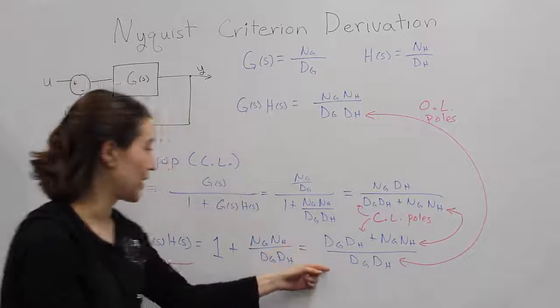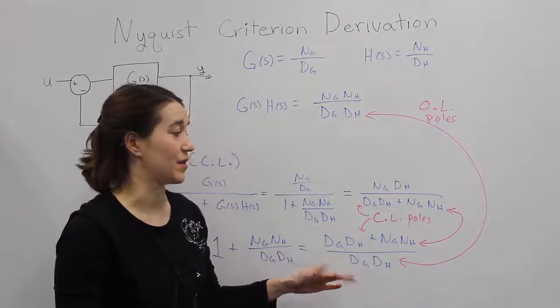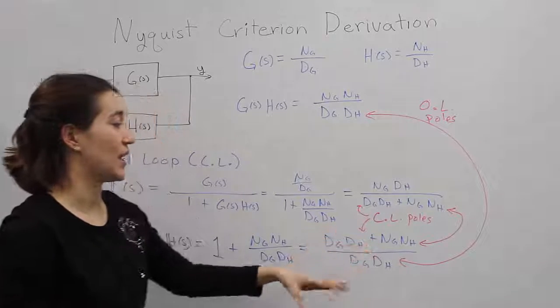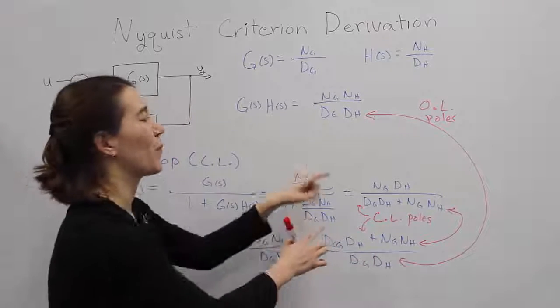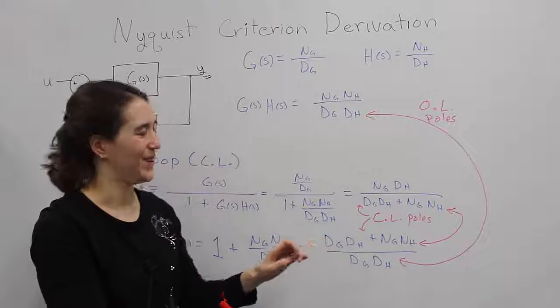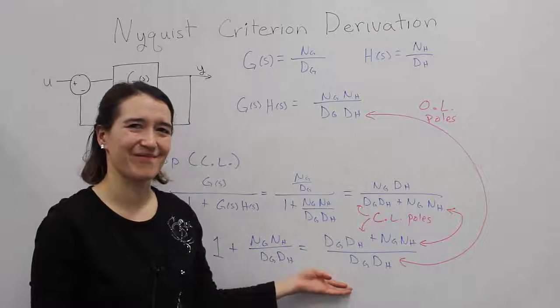So with this, from this equation, we are then going to look at some mapping of our systems, to get a relation between the zeros and poles of this system, which correlate to the open and closed-loop poles. Okay. Hope that makes sense.